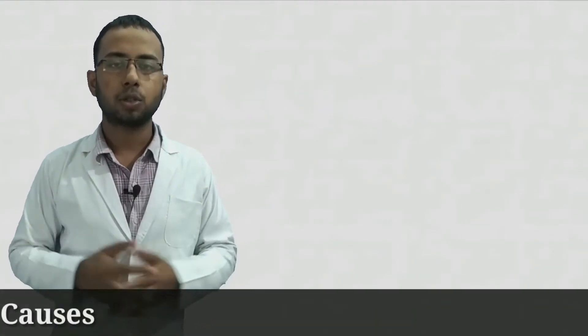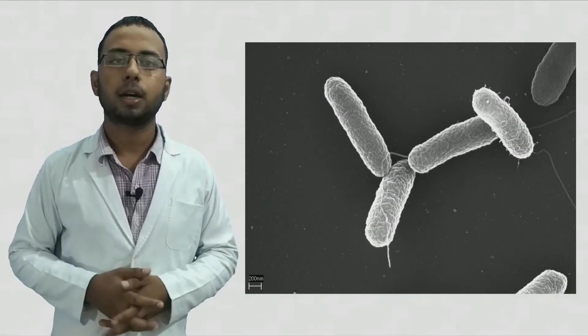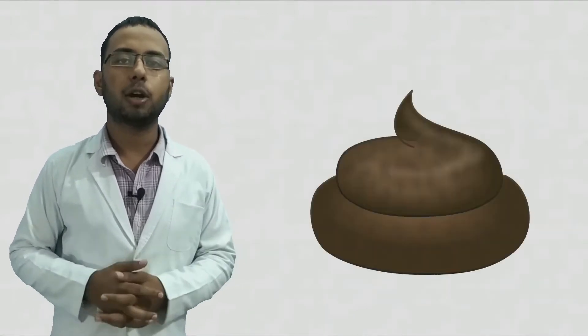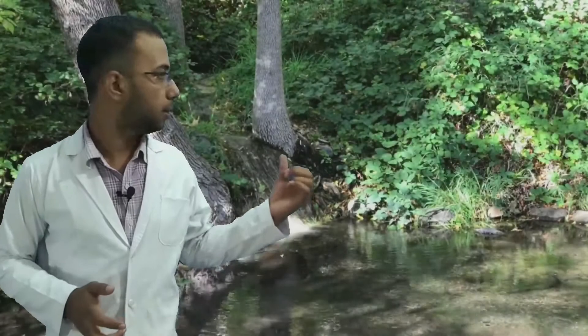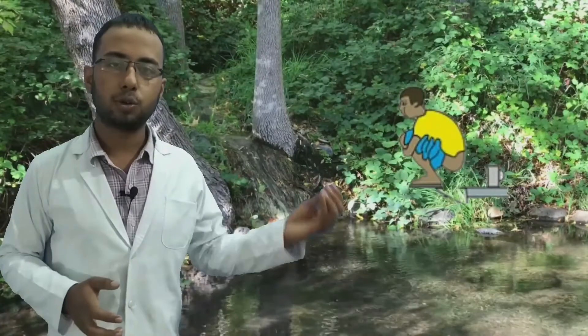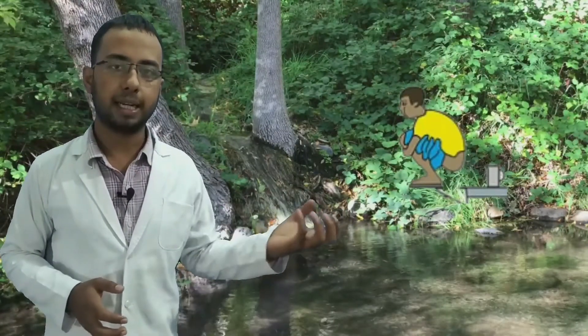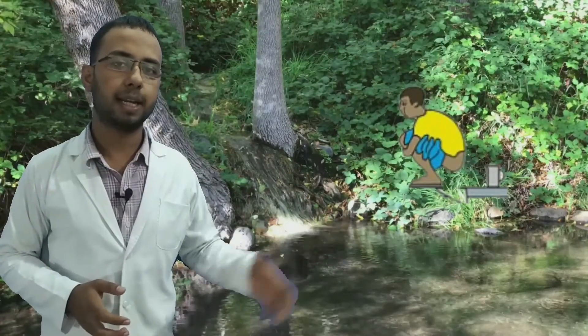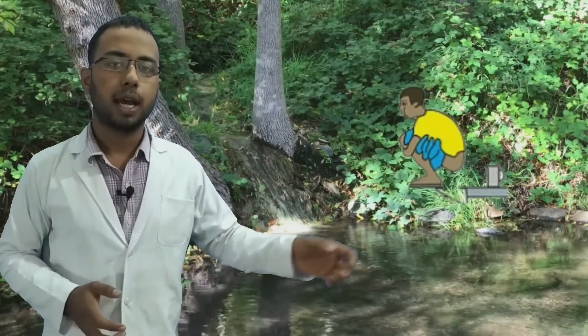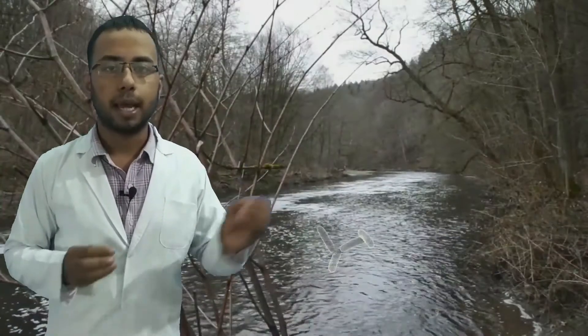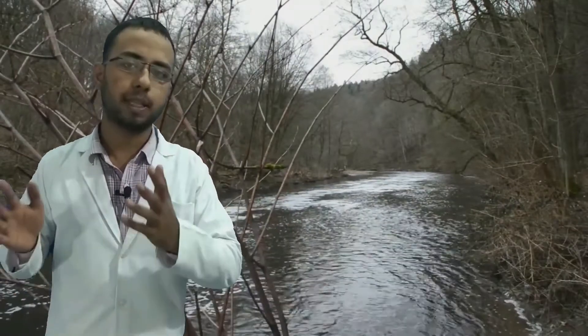Now the causes of typhoid. Typhoid is caused by Salmonella typhi, so it occurs due to the spreading of Salmonella typhi through fecal material of humans. When persons do the excretion process near the river, this fecal material mingles with the river water or water source and flows through it. The bacteria, Salmonella typhi, also reaches the water and flows with it.